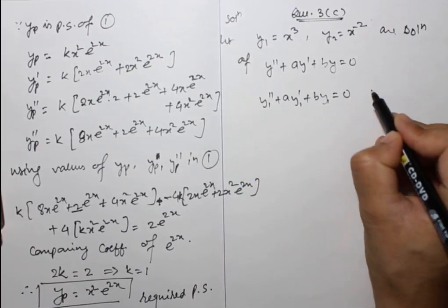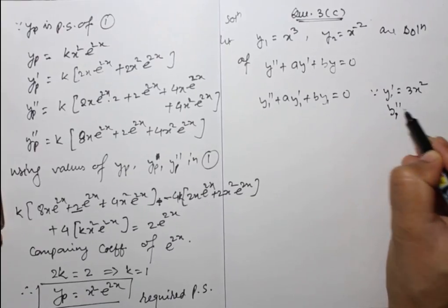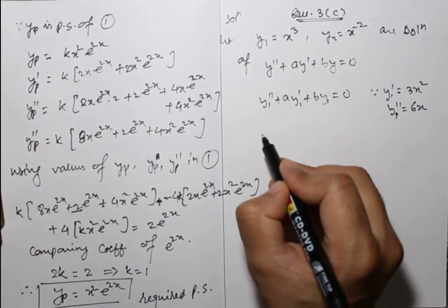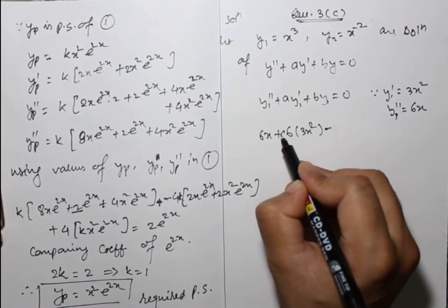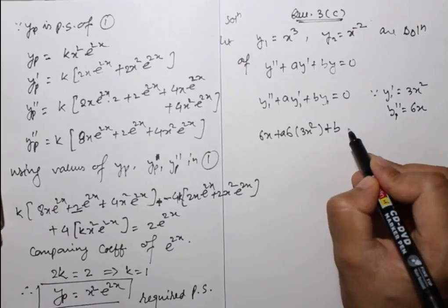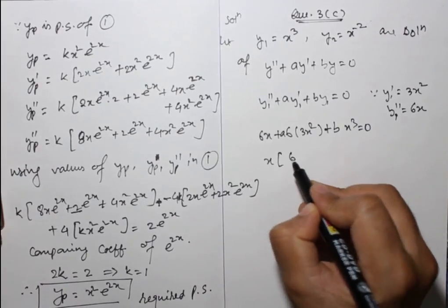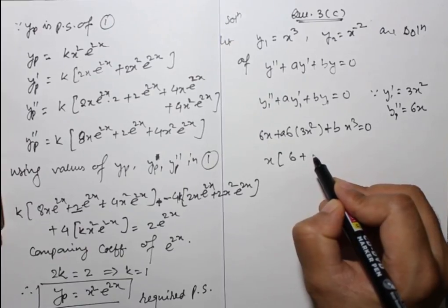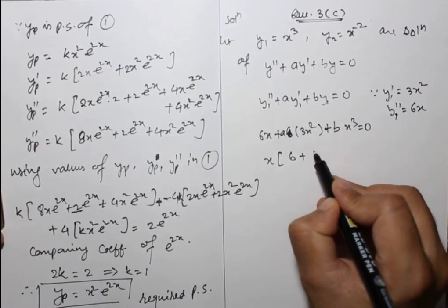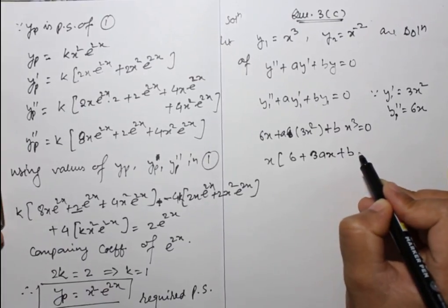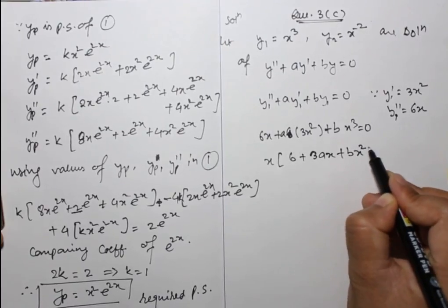Since y1 = x³, we have y1' = 3x² and y1'' = 6x. Using these values we get 6x + a·(3x²) + b·(x³) = 0, which simplifies to an equation relating a and b.